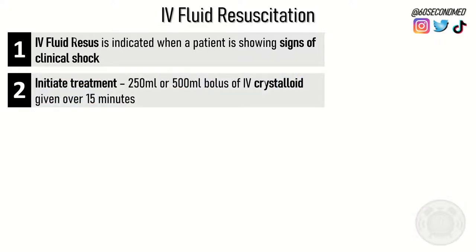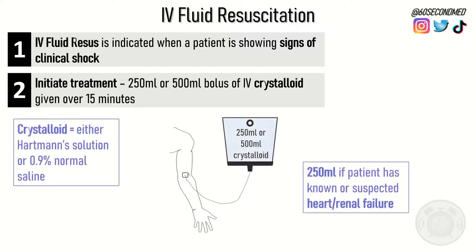You then want to initiate treatment when you suspect clinical shock. Give a 250 ml or 500 ml bolus of IV crystalloid over 15 minutes. The crystalloid solution can either be Hartmann's solution or 0.9% normal saline. It's good practice to give 250 ml if the patient has known or suspected heart or renal failure.